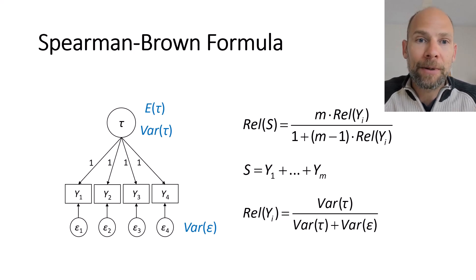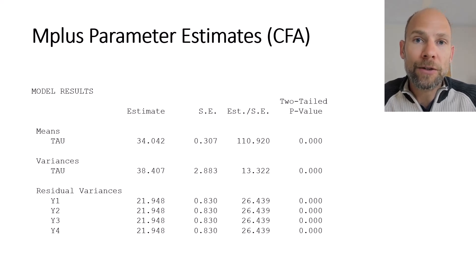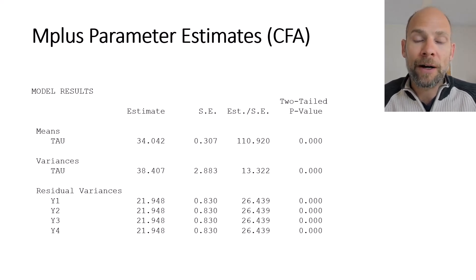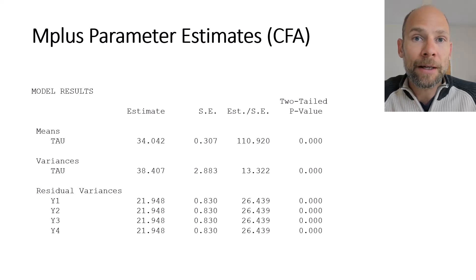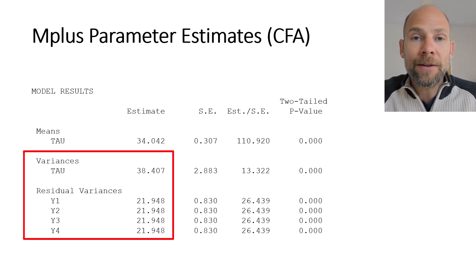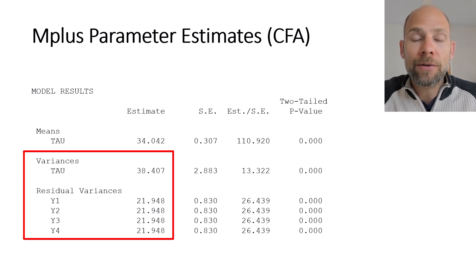In the data example, I fit a CFA model of strictly parallel tests in M-plus. I had four subtests of a math scale and fit the model of strictly parallel variables, meaning I set the loadings all to one and constrained the error variances to be equal. M-plus then provides the three parameters: the mean of tau, the variance of tau (the true score variance component), and the error variance component constrained to be equal across the four subtests.